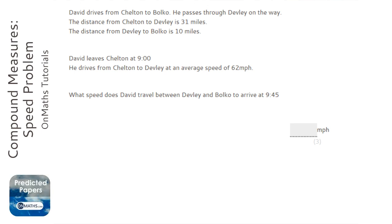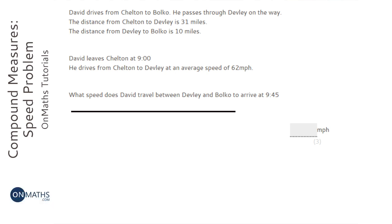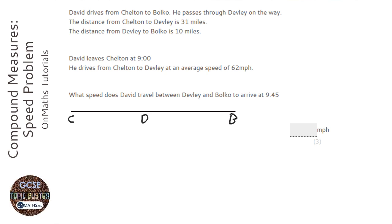My advice with all these questions is always draw a diagram. So I'm just going to draw a line and put the various places on it. So we've got Chilton, which I'm going to call C. We've got Devley, which I'm going to call D. We've got Bocco, which I'm going to call B.